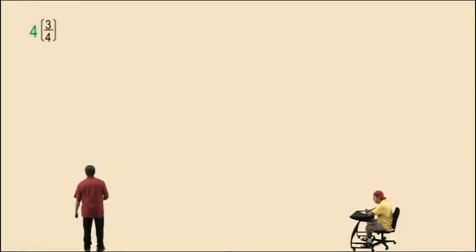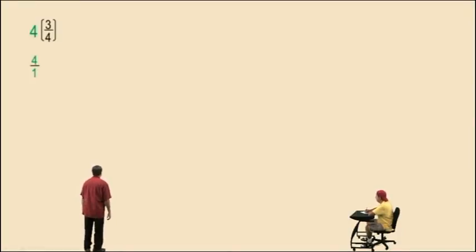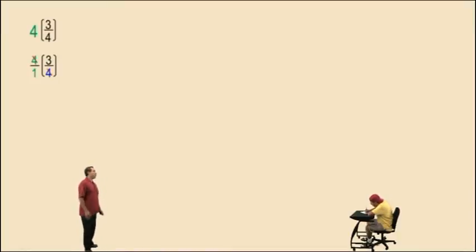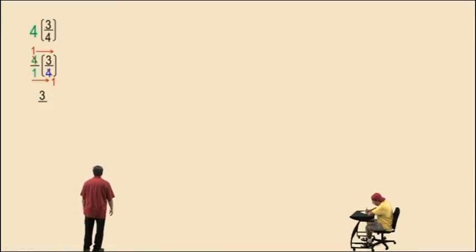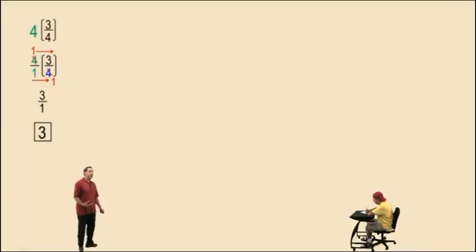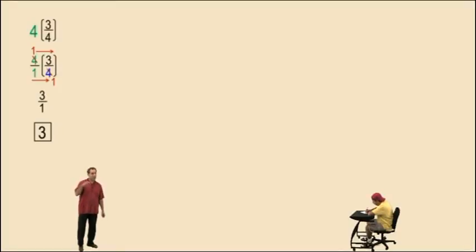Let's show our work here. Let's first write the four as a fraction — four over one. And notice here the fours will cancel. They become ones. And when you multiply straight across the top and straight across the bottom, you get three over one, and the answer is three. Notice we got a whole number for our answer. In the very beginning, you may have noticed those fours canceled.